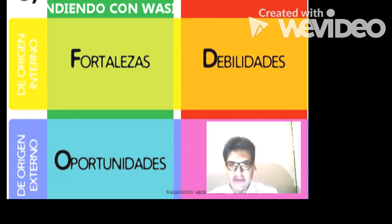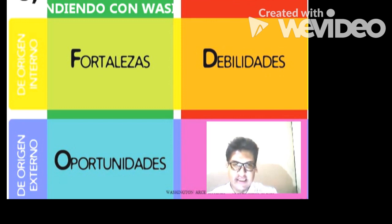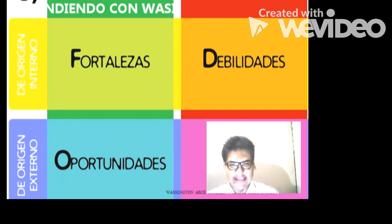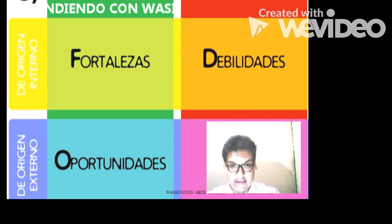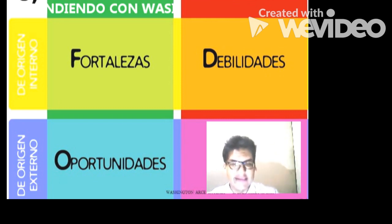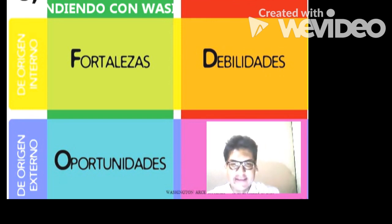Los puntos débiles podrían ser que el empresario tiene la costumbre de llegar tarde al negocio y abre de manera desordenada. Otro punto débil es que el empresario podría ser un poco desordenado y el negocio no lo tiene como debería estar. Esas cualidades internas débiles se tienen que superar para que el empresario pueda mejorar. Si era muy sociable, tiene que ser más sociable. A veces los clientes entran malhumorados y una conversación sencilla del empresario hace que el cliente acceda a comprar.